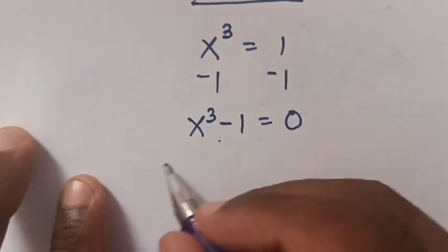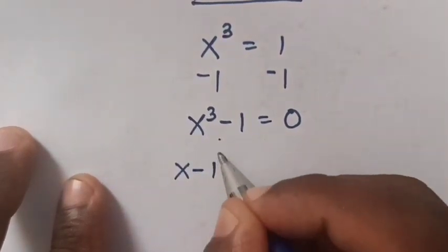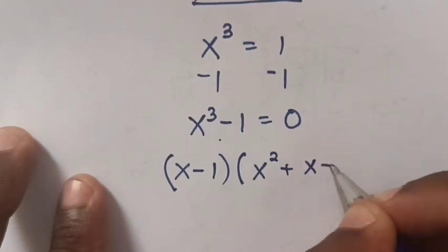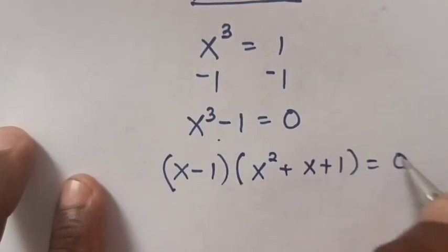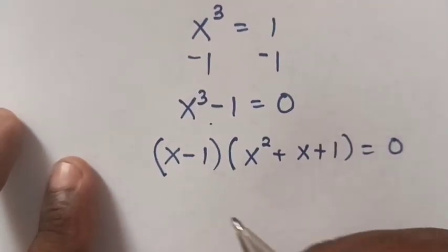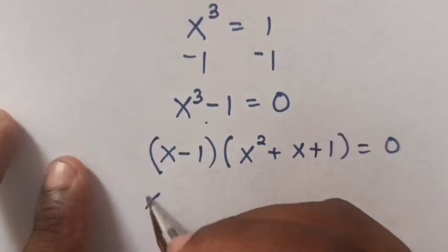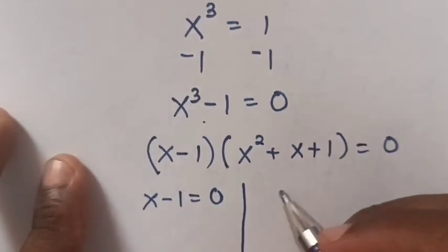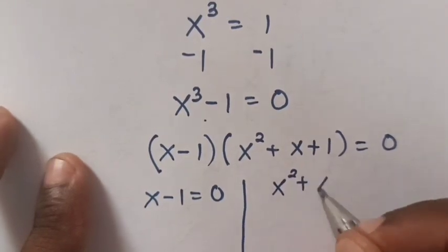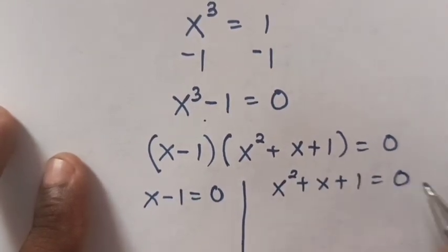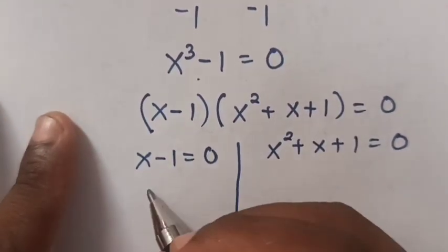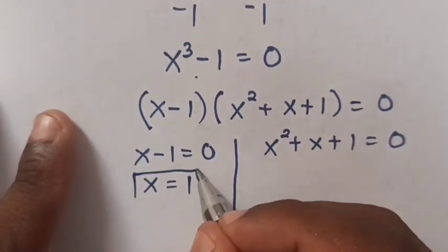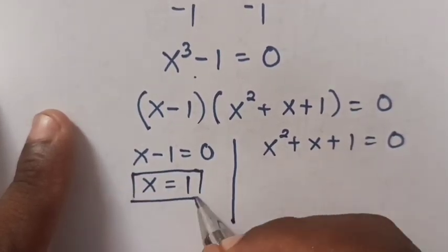...x³ - 1 = (x - 1)(x² + x + 1) = 0. Now we can solve by two cases: x - 1 = 0 and x² + x + 1 = 0. From the first case, x = 1. Therefore the value of x₁ is 1.